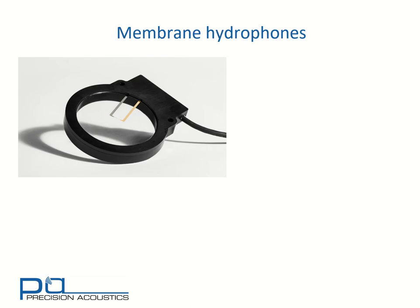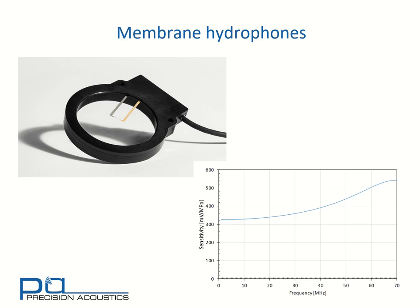Finally, we consider membrane hydrophones. Because these are much larger devices, they don't have the same diffractive resonances that one sees with probe or fibre optic hydrophones. In this case, their only feature in their frequency response is their thickness resonance. For this hydrophone, we see that at about 65 to 70 MHz. Below that, we have a very smoothly varying response, and at very low frequencies — below 30 MHz — there's very little variation as a function of frequency.